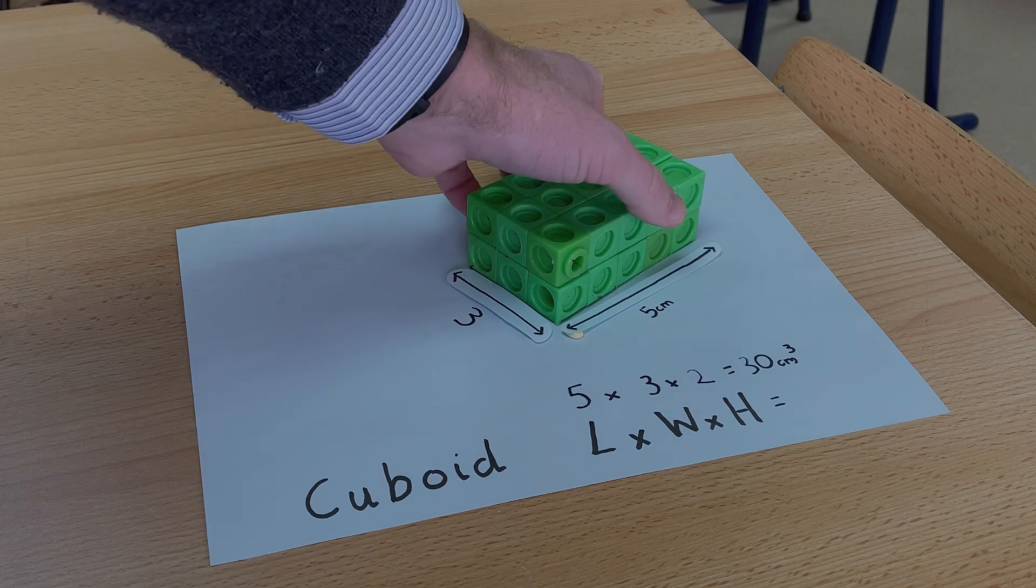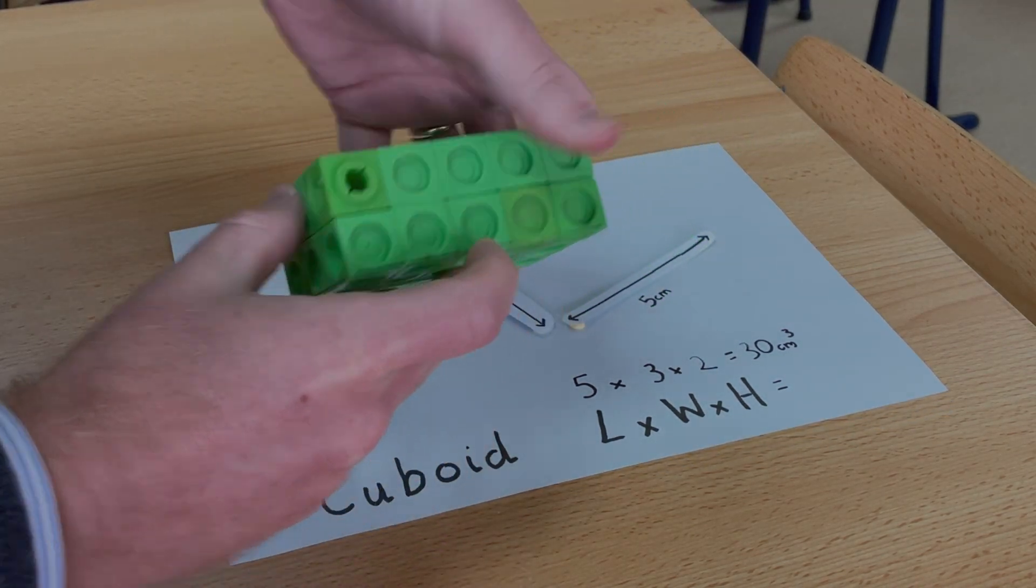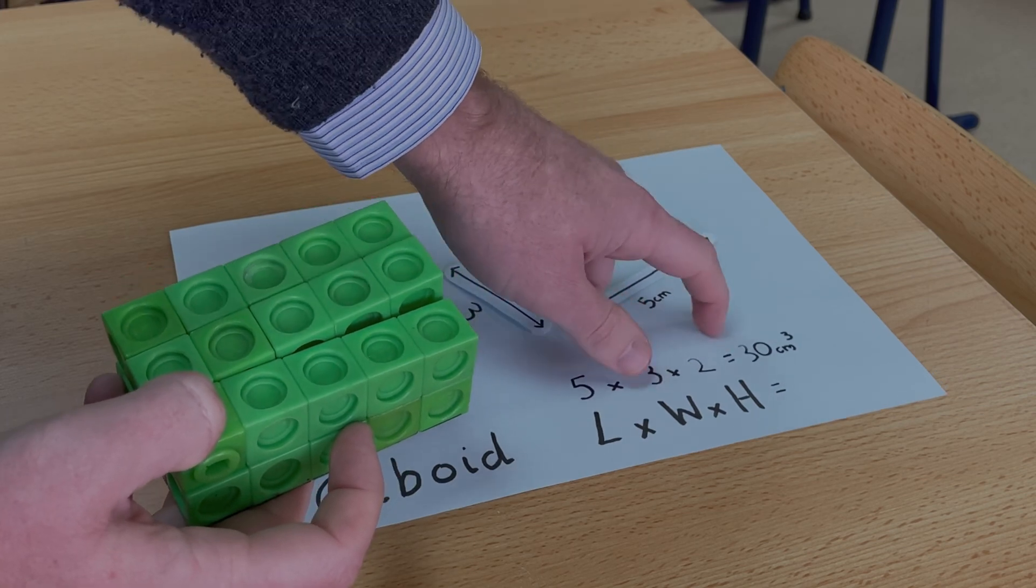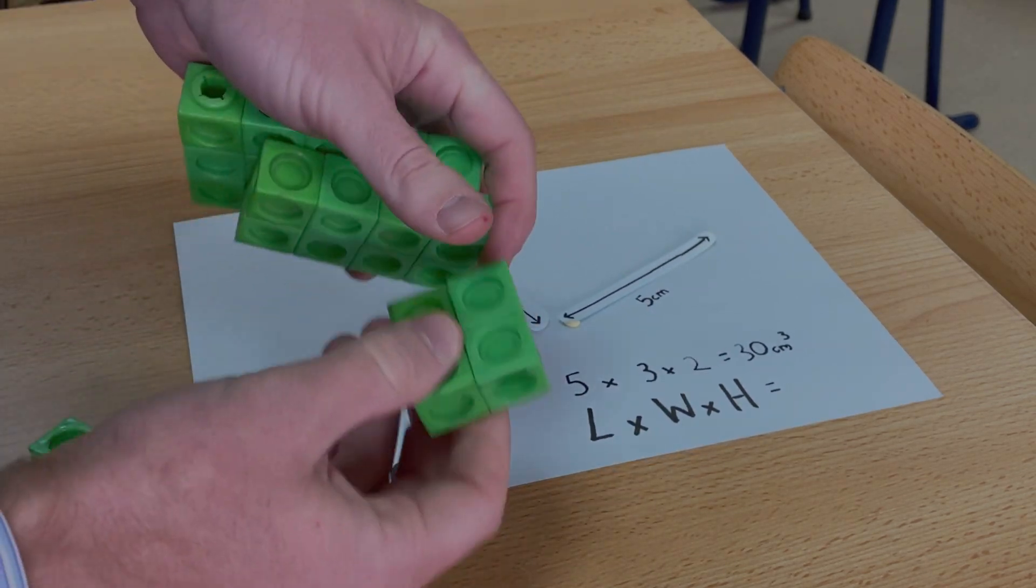Now if I deconstruct the cuboid, we can actually count to see and prove that I was right and this formula works. So let's do that.